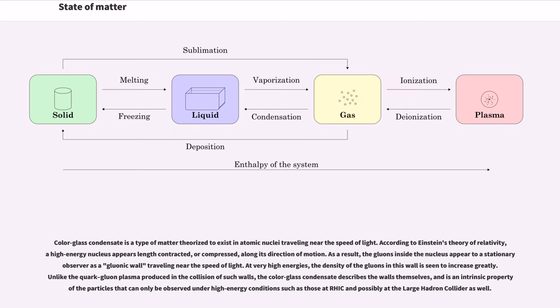Color glass condensate is a type of matter theorized to exist in atomic nuclei traveling near the speed of light. According to Einstein's theory of relativity, a high energy nucleus appears length contracted, or compressed, along its direction of motion. As a result, the gluons inside the nucleus appear to a stationary observer as a gluonic wall traveling near the speed of light. At very high energies, the density of the gluons in this wall is seen to increase greatly. Unlike the quark-gluon plasma produced in the collision of such walls, the color glass condensate describes the walls themselves, and is an intrinsic property of the particles that can only be observed under high energy conditions such as those that exist at the Large Hadron Collider.